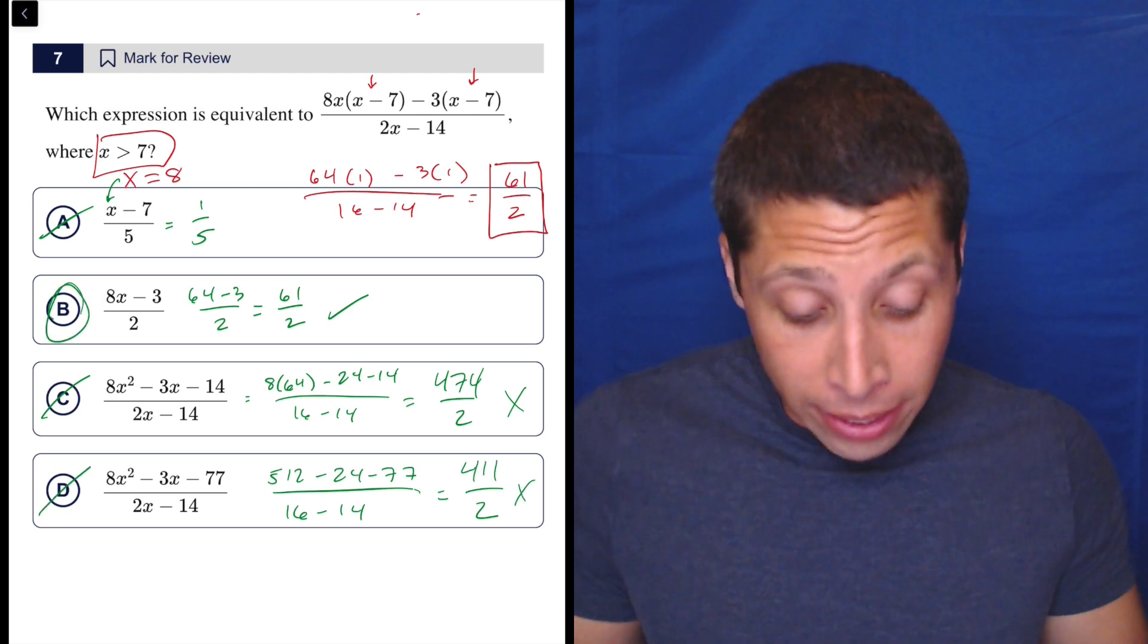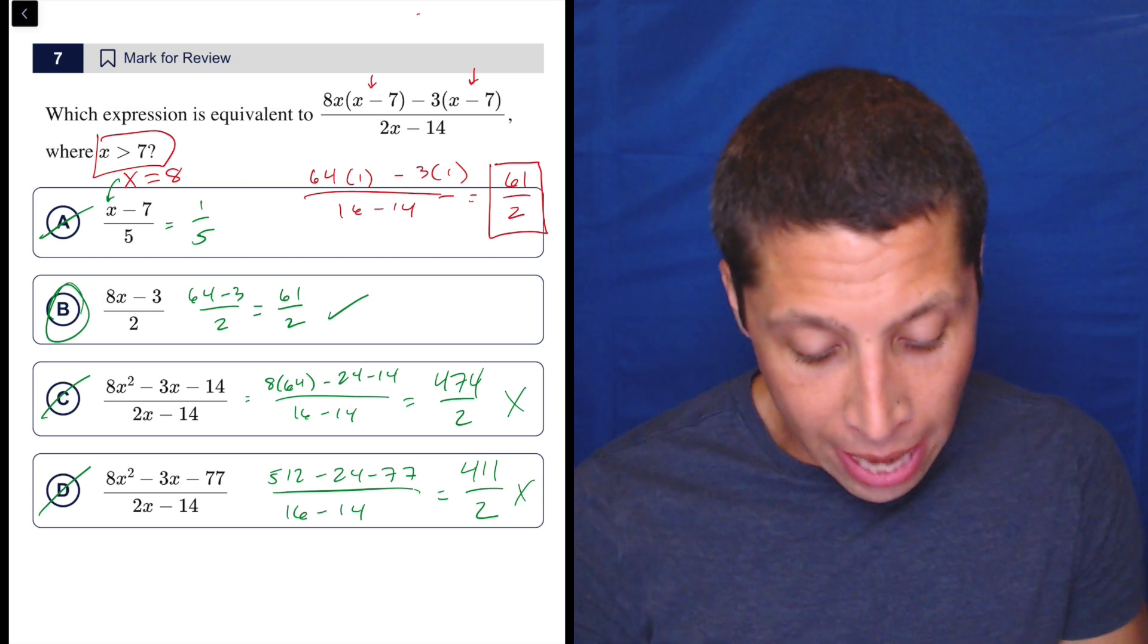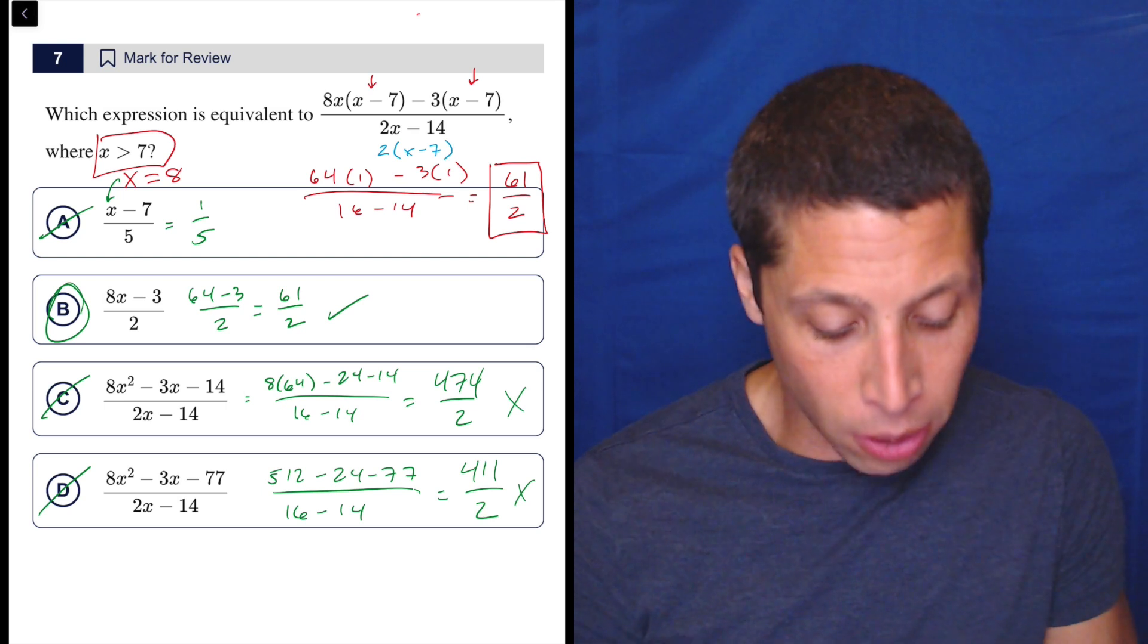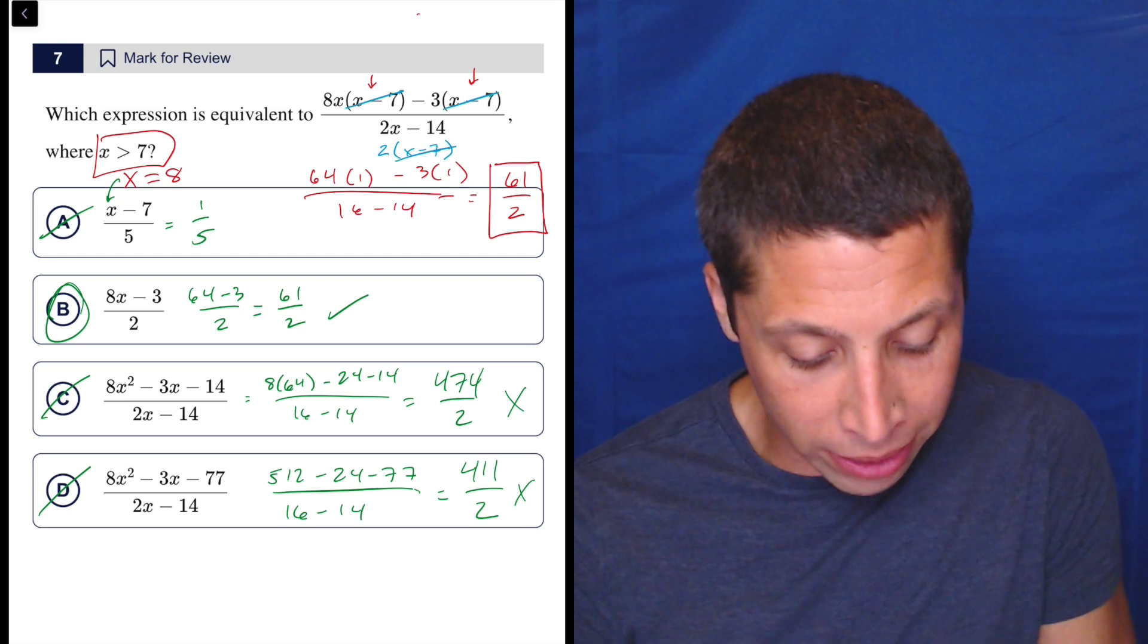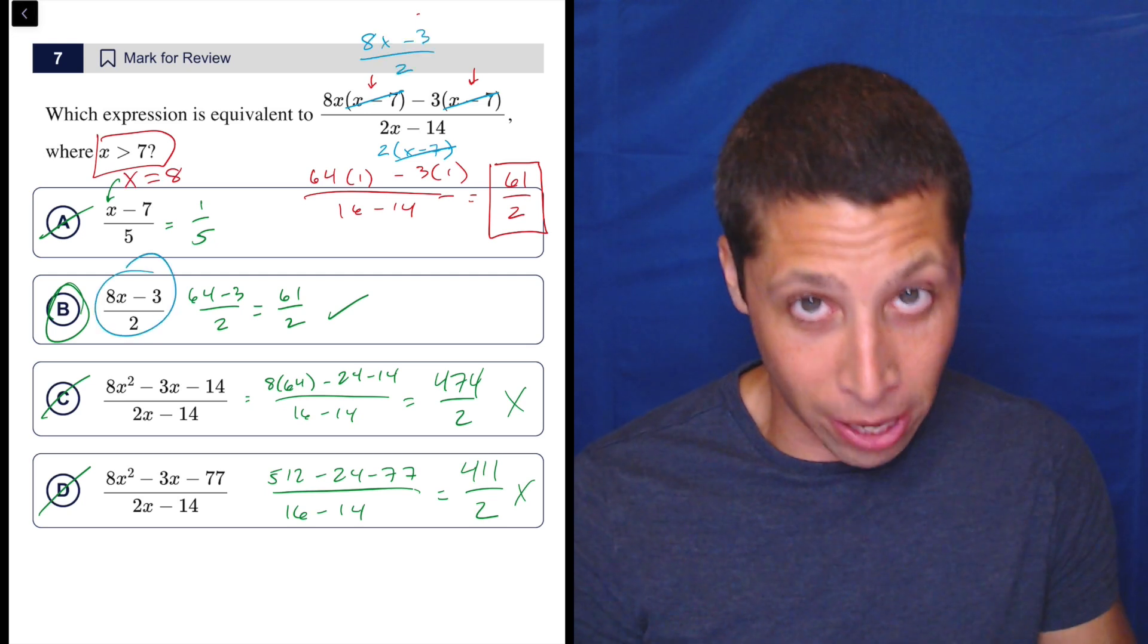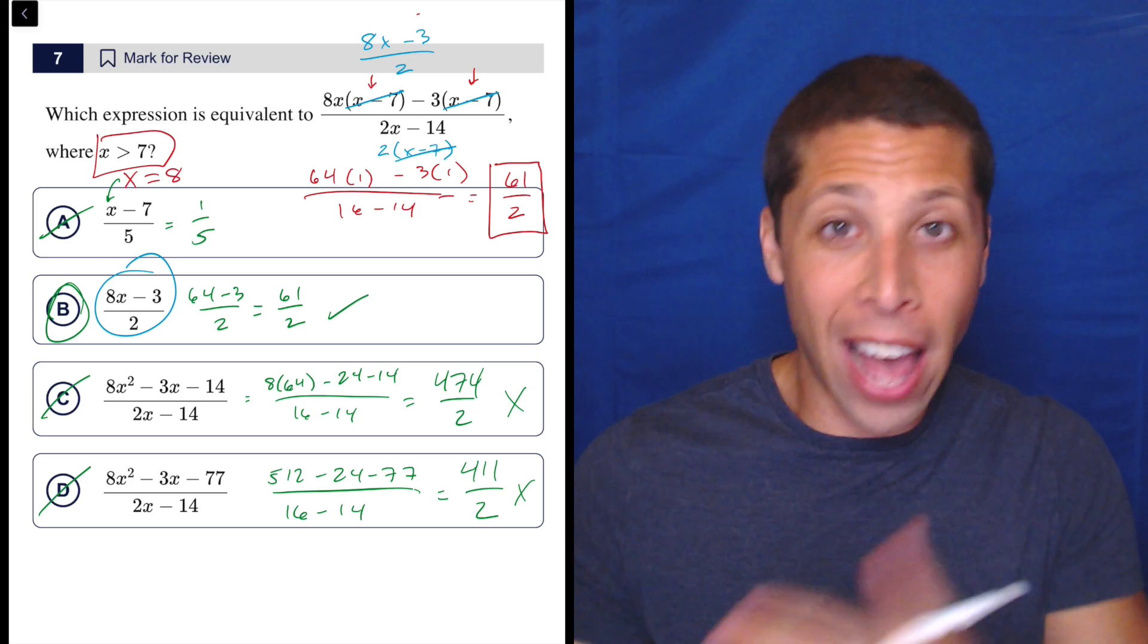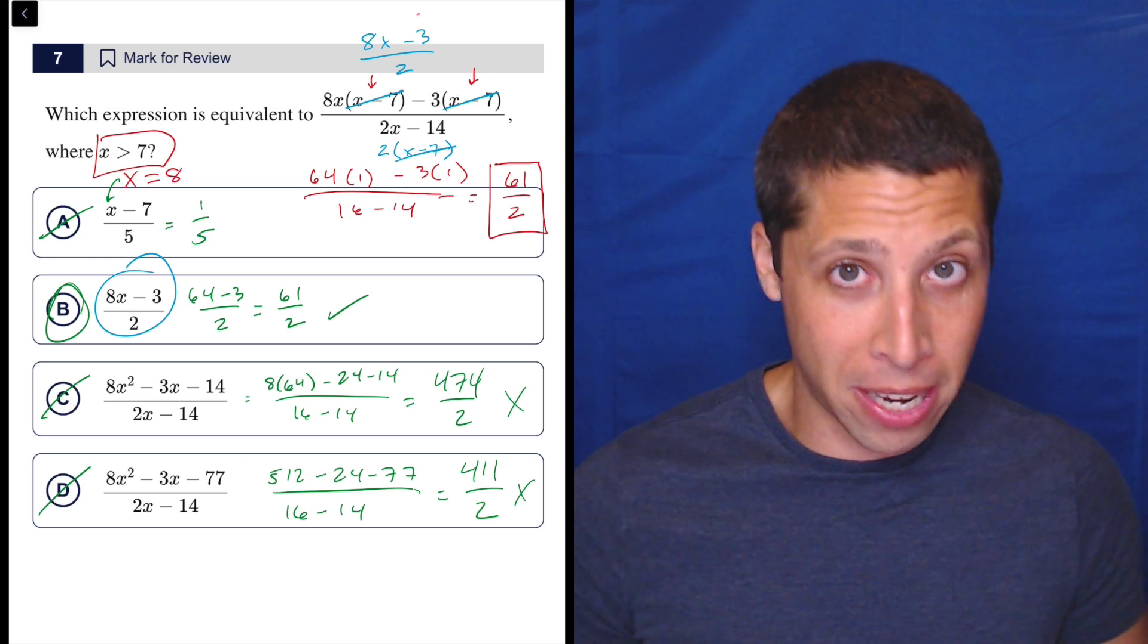Now, I don't think that that's so bad. There is a way to do this. If you kind of see the algebra, right? So we could factor out X minus seven and say, Oh, okay. Now X minus seven can be removed from everything. And what are we left with? We're left with eight X minus three over two, which is exactly what B is, right? So yes, in this case, that is easier. That algebra is easier and faster than all this arithmetizing.